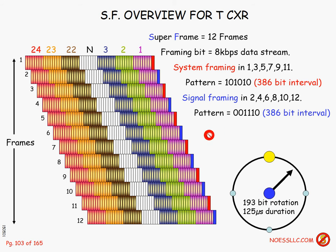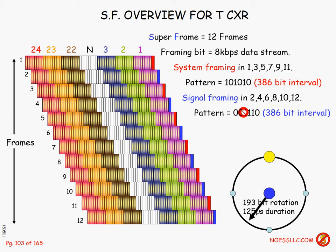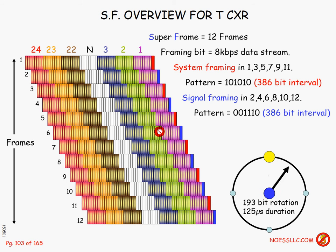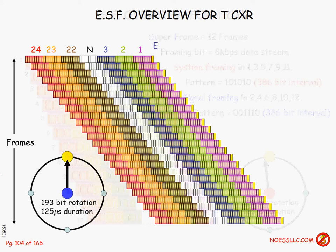Some people call this an A and B channel. The signal framing pattern tells the receiver which frame is number one, two, three, so it can recognize when it's in frame six and the voice call may be using this bit-rob process for off-hook and on-hook signaling.